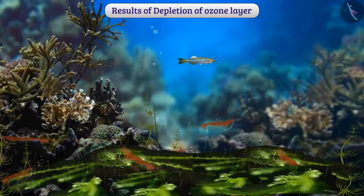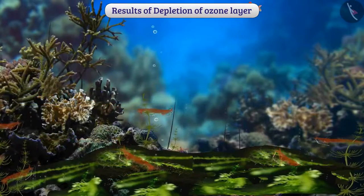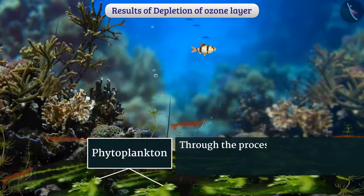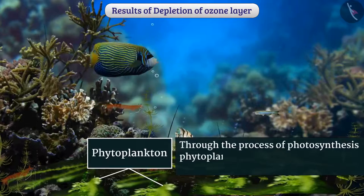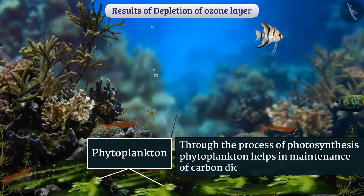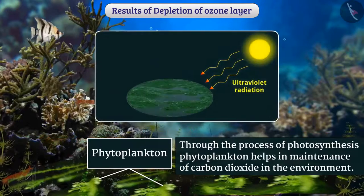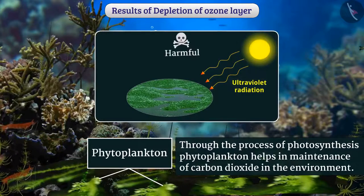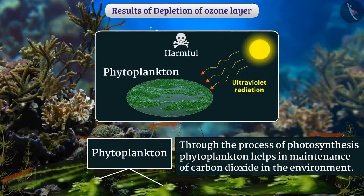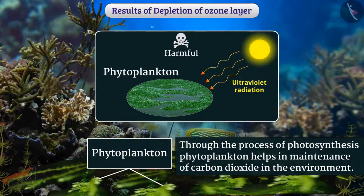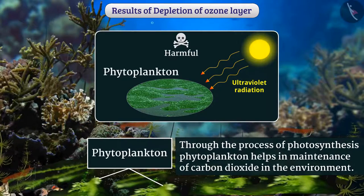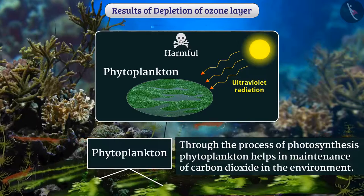For aquatic animals such as fish, the main source of food is phytoplankton. Through the process of photosynthesis, phytoplankton helps in the maintenance of carbon dioxide in the environment. Ultraviolet radiation is harmful to aquatic plants such as phytoplankton. If there are no phytoplankton, then there will be no fish and many animals will not get food including humans.